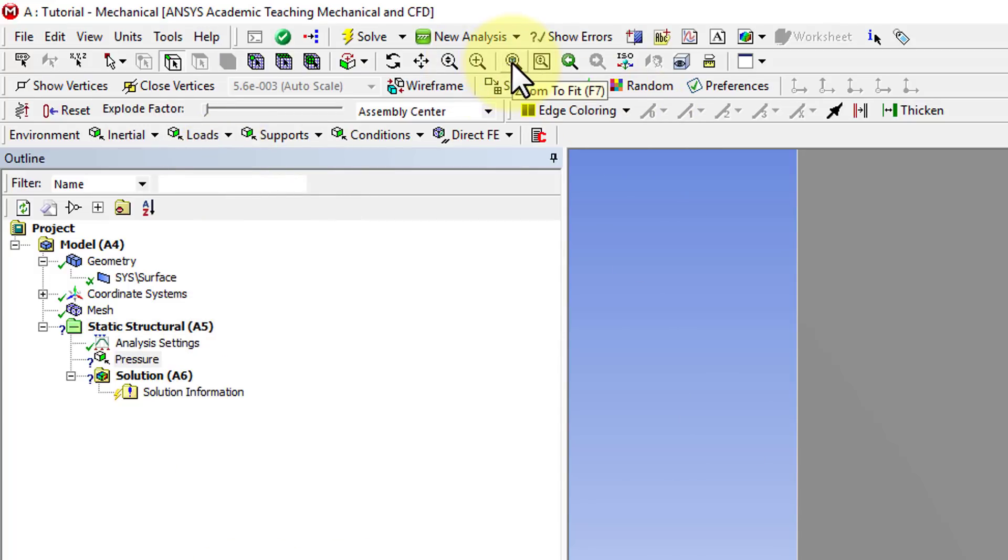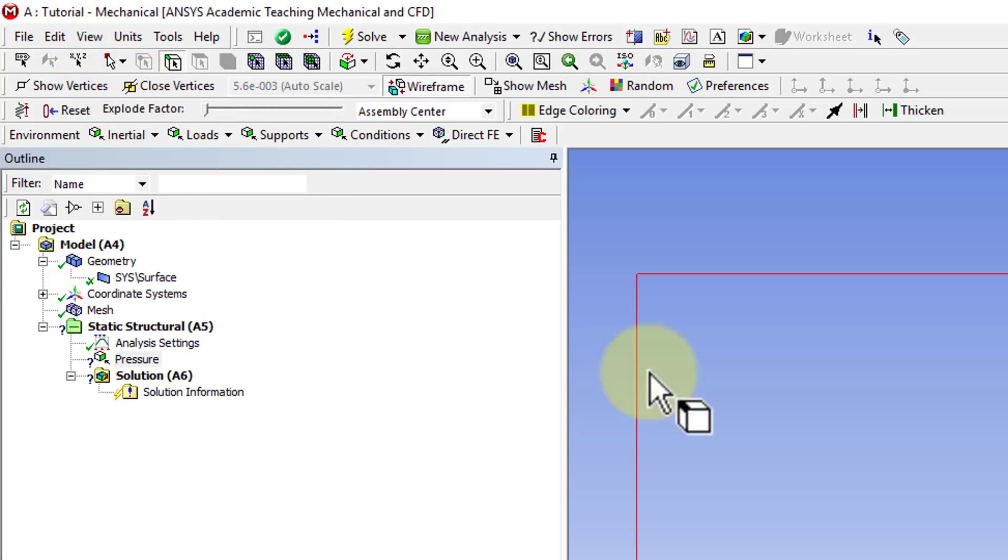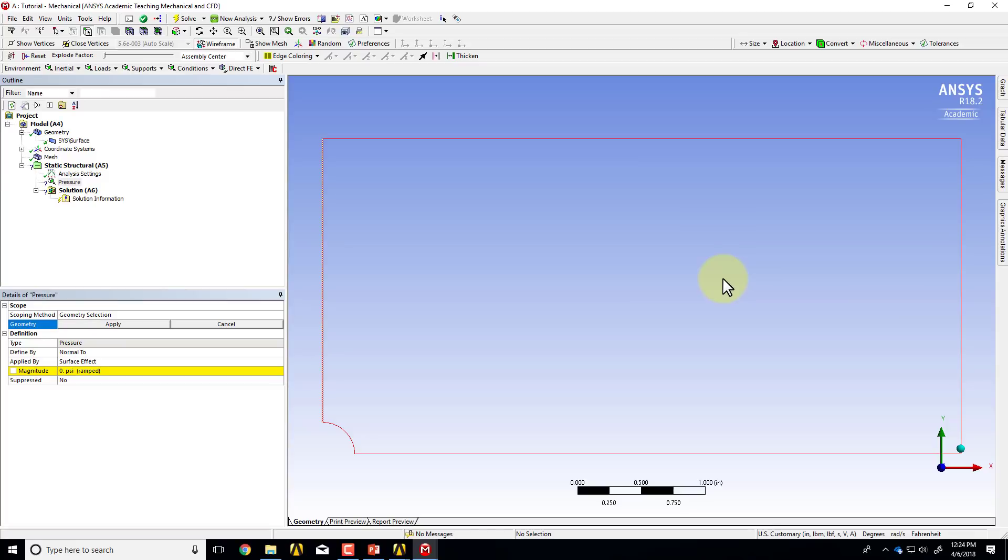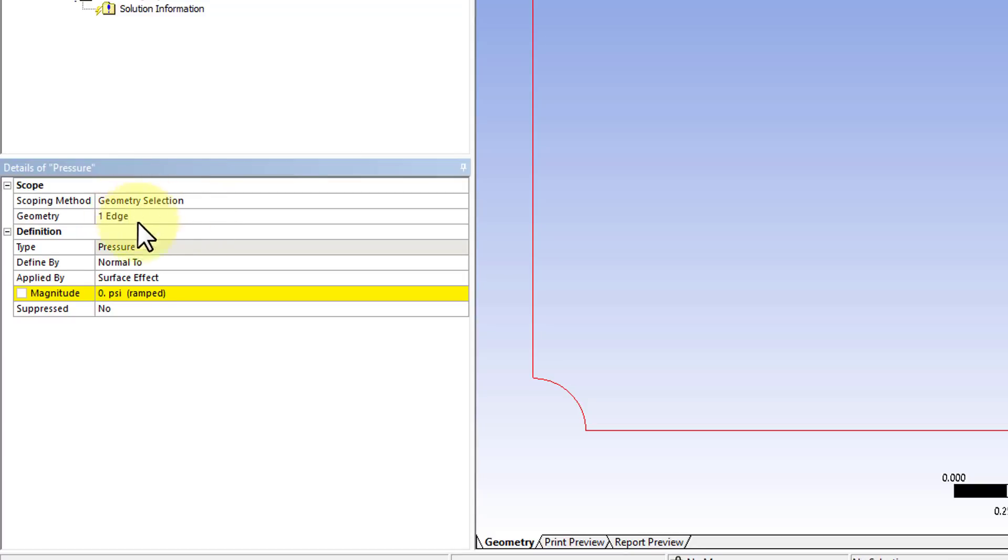And in fact, I can go to a wireframe view. So I'll say view wireframe, and that way I can see the right boundary nicely. And I can click on it, and I'll say apply.